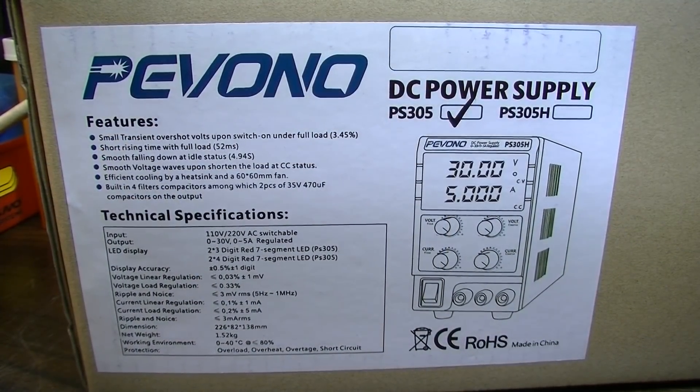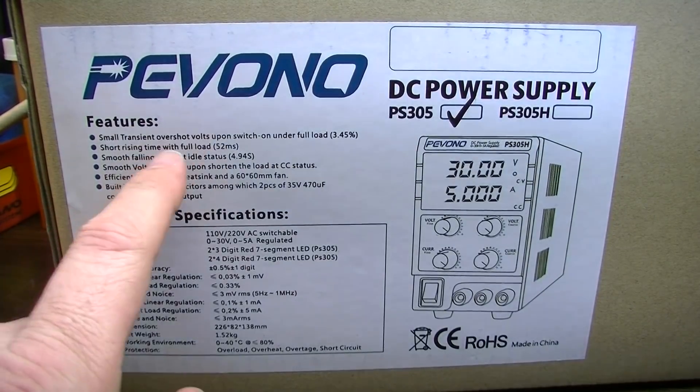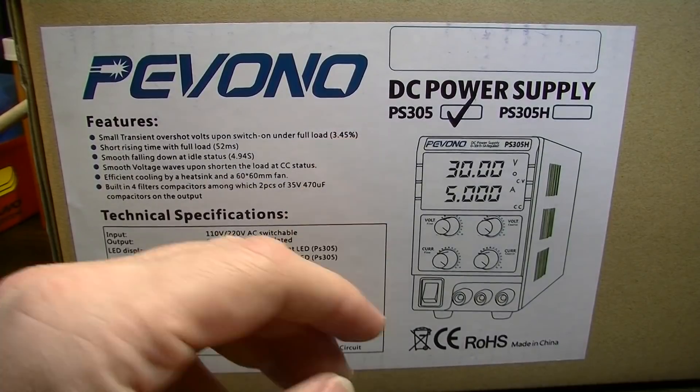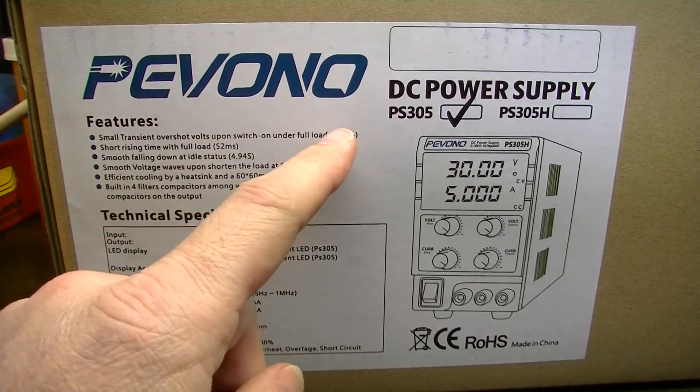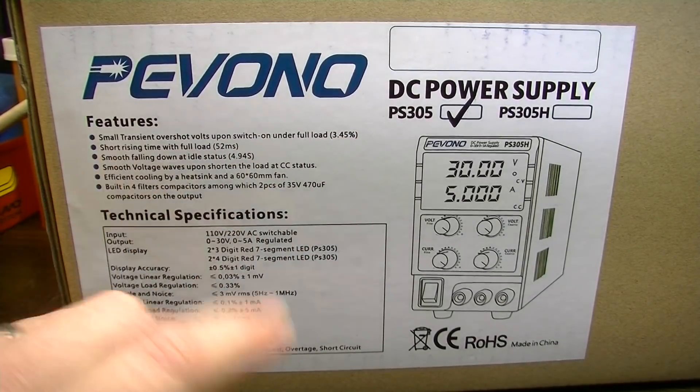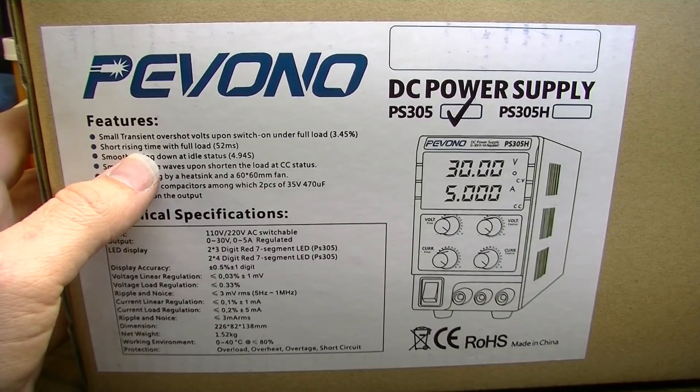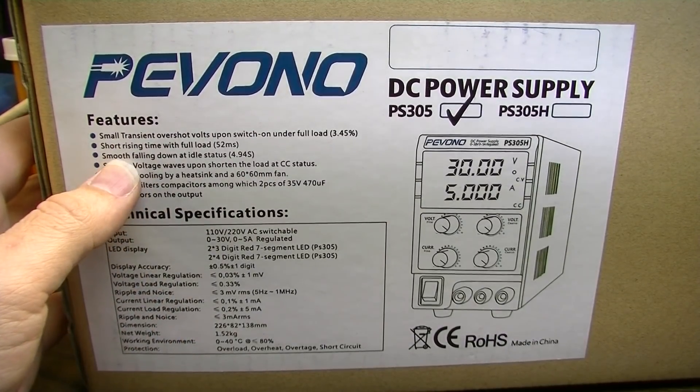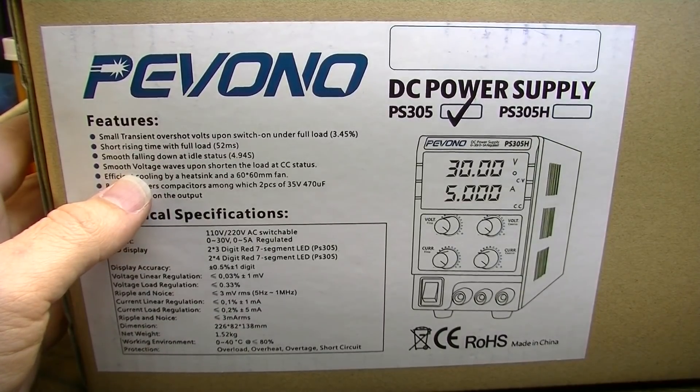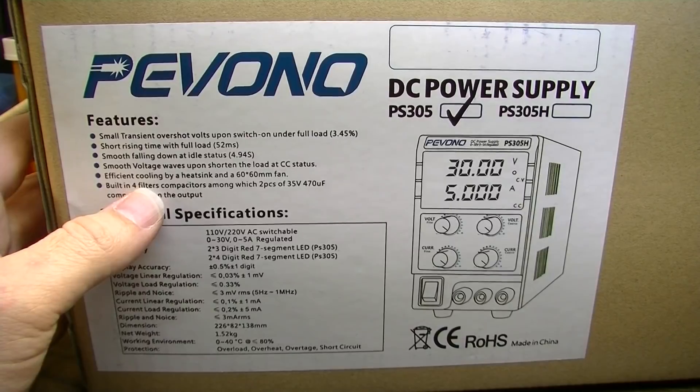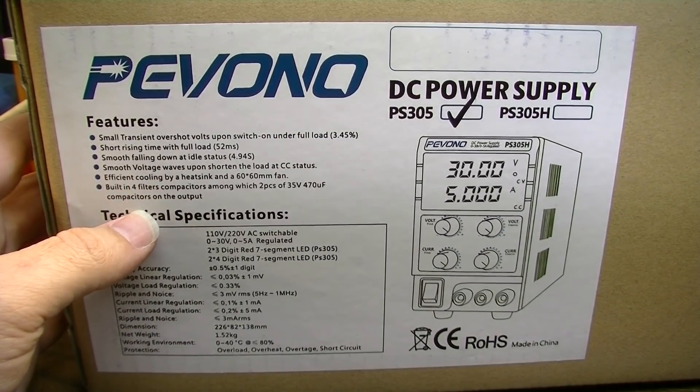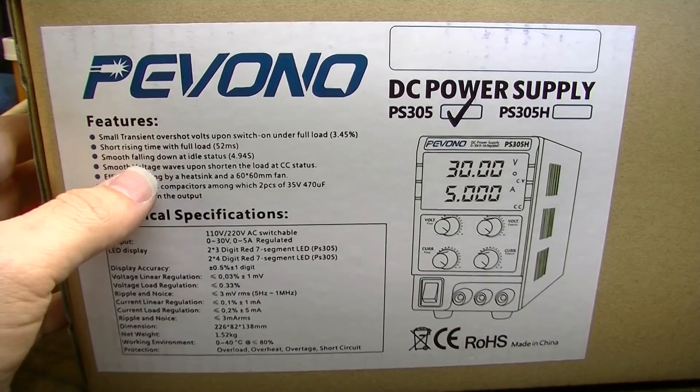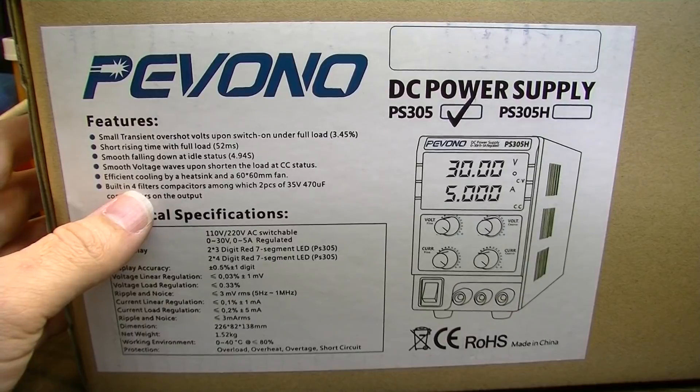All right, before we open this box, let's take a look at the specs here. It says we should expect some small transient overshoot volts upon switch on under full load. So that means when you first switch the thing on, it's not going to overload your circuits more than three and a half percent or so. So that's pretty good. So it's well regulated. Short rising time with a full load attached. So that means it comes up to power pretty quickly. Smooth falling down at idle status. And we could probably go through and test all this stuff, but once again, that's probably not going to be really the focus of this video. I'll let other people take care of that. And I think some of the other YouTubers have already tested some of these things to see if they are within spec.